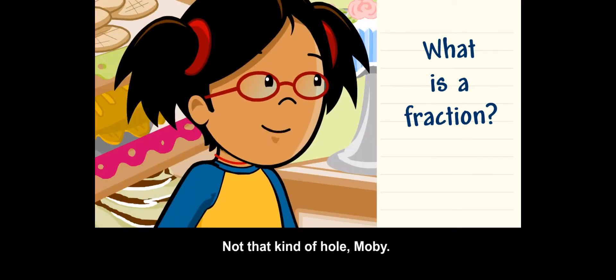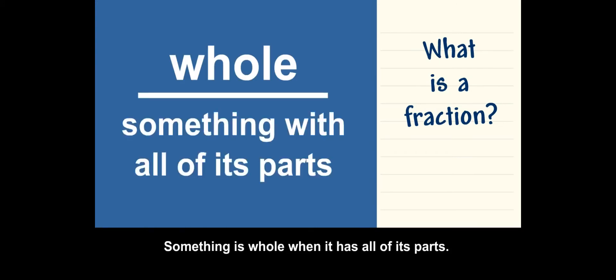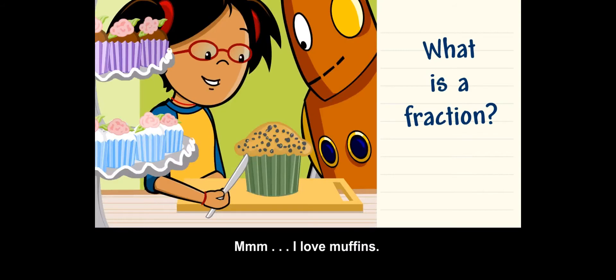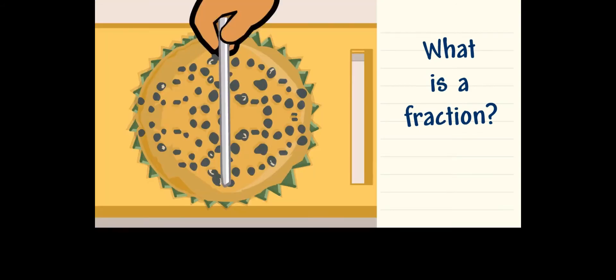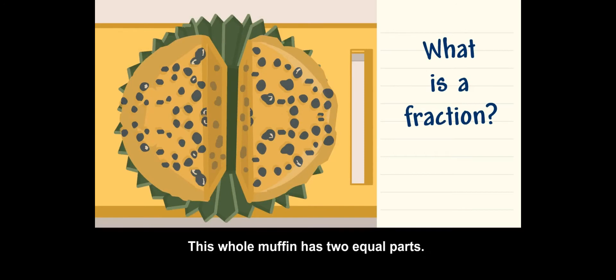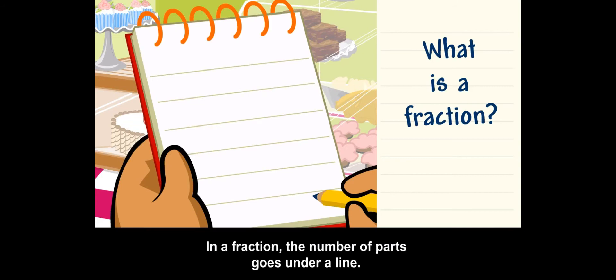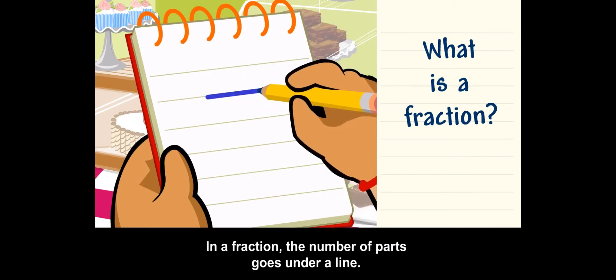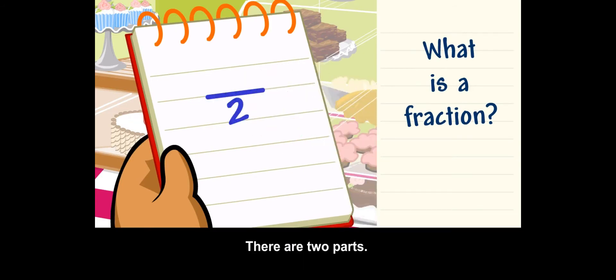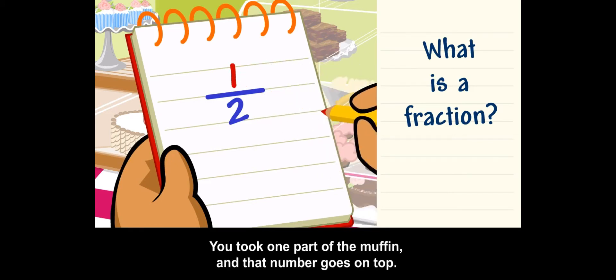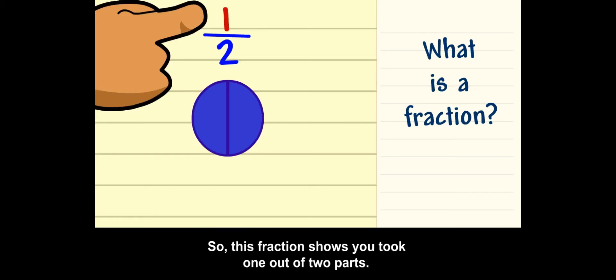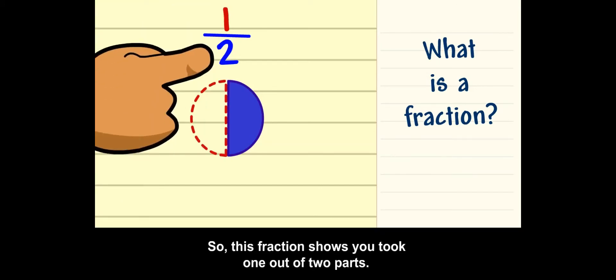Not that kind of whole, Moby. Something is whole when it has all of its parts. Mmm, I love muffins. This whole muffin has two equal parts. In a fraction, the number of parts goes under a line. There are two parts. You took one part of the muffin, and that number goes on top. So this fraction shows you took one out of two parts. You can also write this as one half.